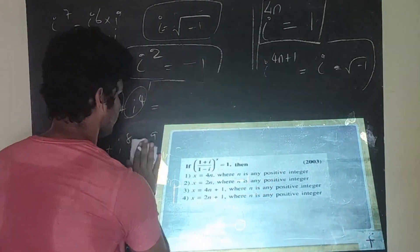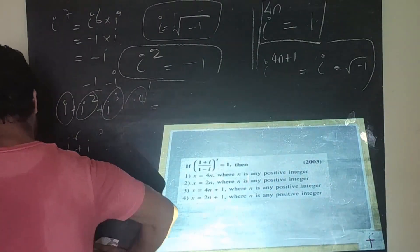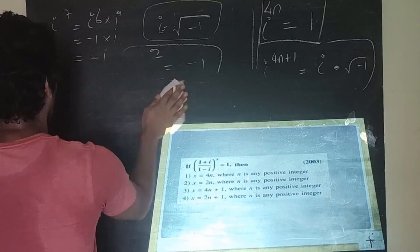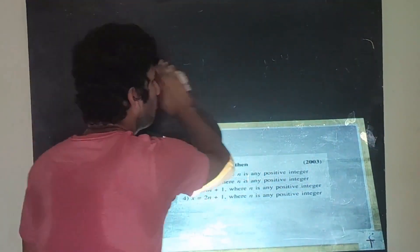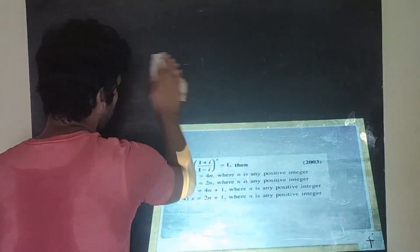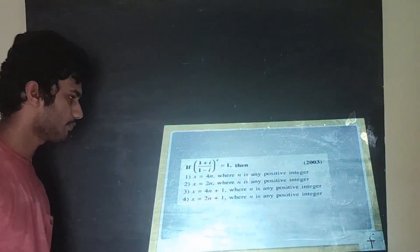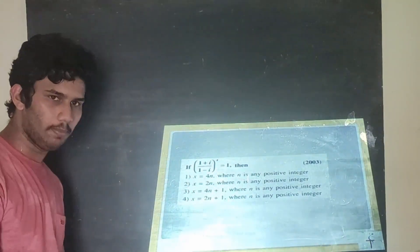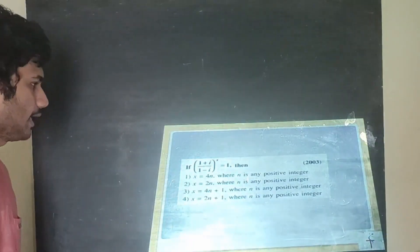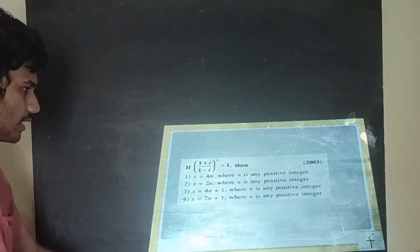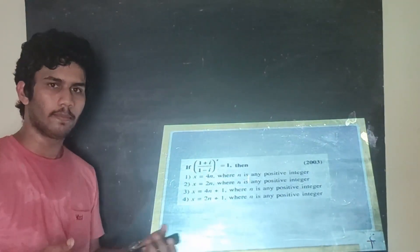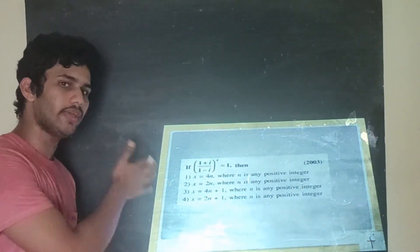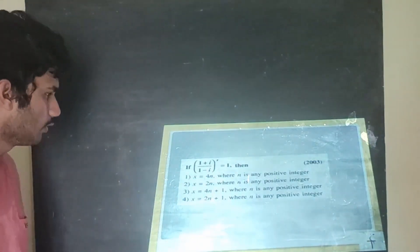Here is a very interesting question — previously asked in NDA and JEE. If ((1 + i)/(1 − i))^x = 1, then which value of x is true? You can pause the video, try it once, and then look at the solution.